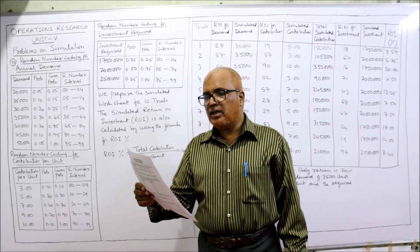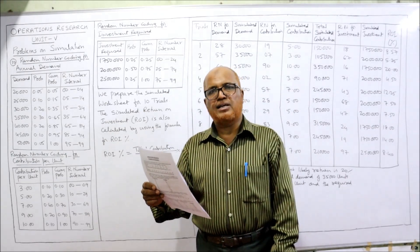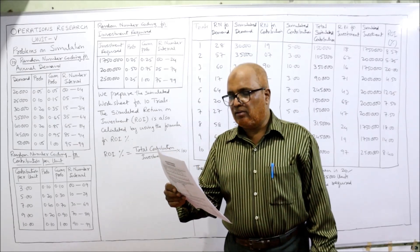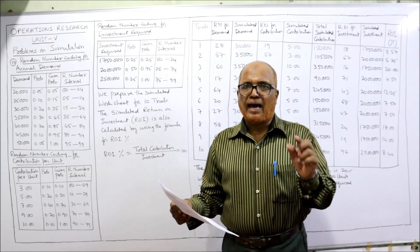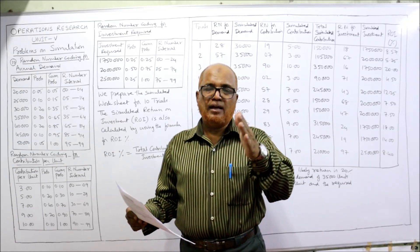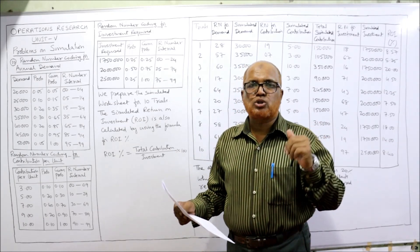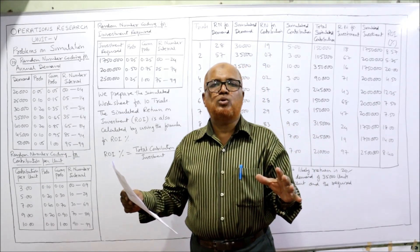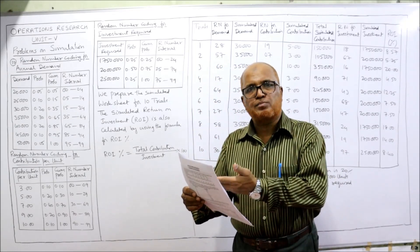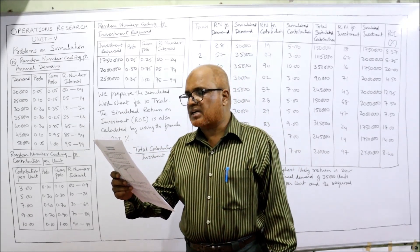We will use Monte Carlo simulation for ten runs to estimate the percentage return on investment (ROI). The formula given in the problem is: ROI = (cash inflow / investment) × 100. Cash inflow means total contribution, which is demand multiplied by contribution per unit. Divided by investment, then multiplied by 100. For each run, we recommend an optimum investment strategy based on the modal value of ROI.